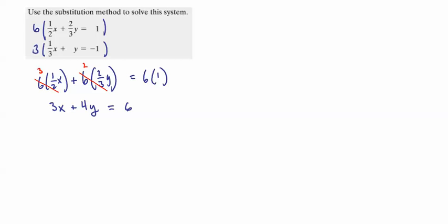The second equation, I'll write out all the terms. 3 times 1 over 3x plus 3 times y equals 3 times negative 1. 1 times 1, so we end up with 1x or just x there. 3 times y, that's 3y. 3 times negative 1, that's negative 3.